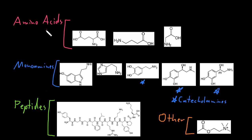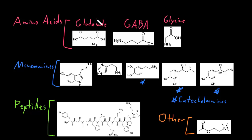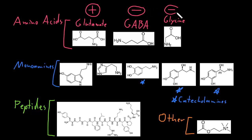Starting with the amino acids: important amino acid neurotransmitters are glutamate, gamma-aminobutyric acid — which pretty much everybody shortens to GABA — and glycine. Glutamate is the most common excitatory neurotransmitter of the nervous system, because it usually causes depolarization of target cells and excites them. GABA and glycine are the most common inhibitory neurotransmitters of the nervous system, because they usually cause hyperpolarization of target cells and inhibit those target cells.